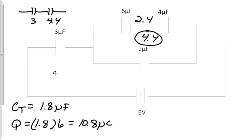So what that means is on the 3 microfarad capacitor, we've got 10.8 microcoulombs, and on the 4.4, there's 10.8 microcoulombs. So we know that this one is 10.8 microcoulombs, but this combination here has the 10.8.